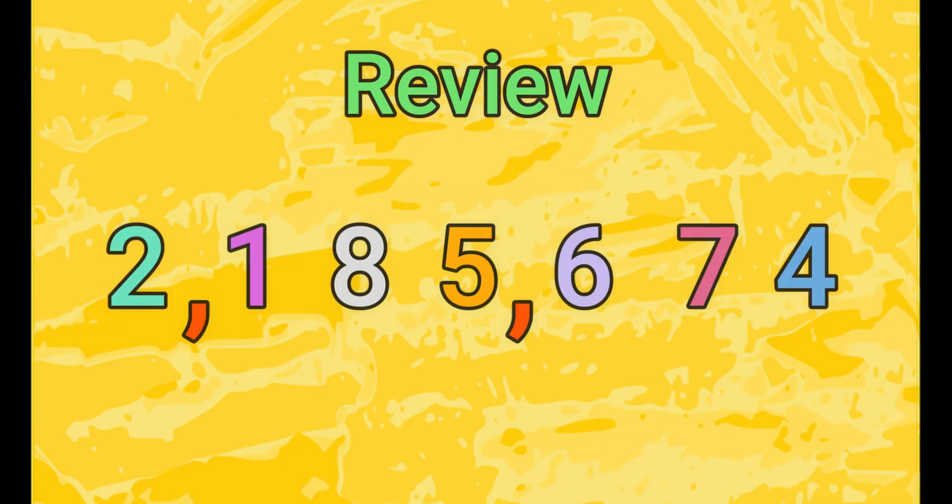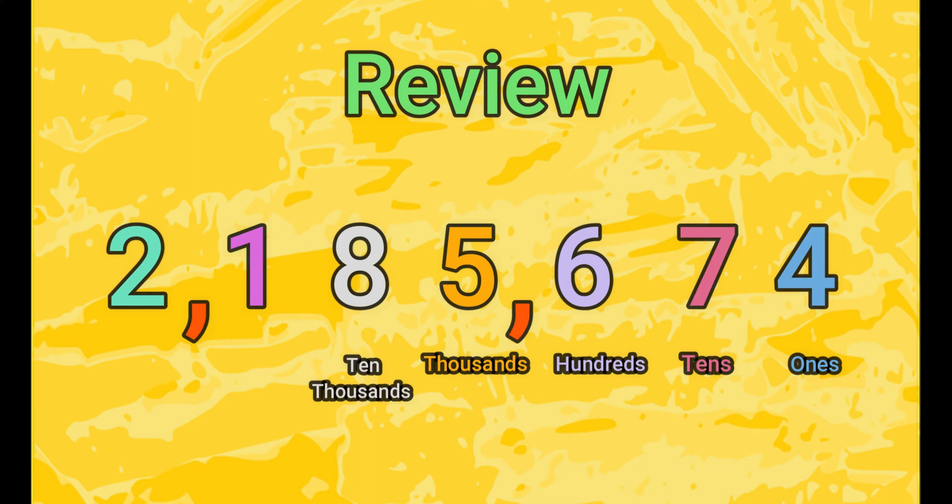Now is a great time to start reviewing the place value columns that we've learned. The smallest place value location for whole numbers is the ones place. Next door is the tens place and then the hundreds place. Then comes the thousands place, ten thousands place, hundred thousands place, and finally the millions place. You can keep counting up but we're gonna stop there.